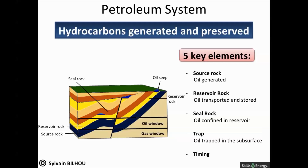Third, a seal — an impermeable rock which covers the reservoir. Fourth, a trap, in order to prevent the hydrocarbons from reaching the surface. The oil and gas should be trapped in the subsurface. Fifth, good timing: the trap should exist before the oil migrates into the reservoir, in order to prevent the hydrocarbons from reaching the surface.